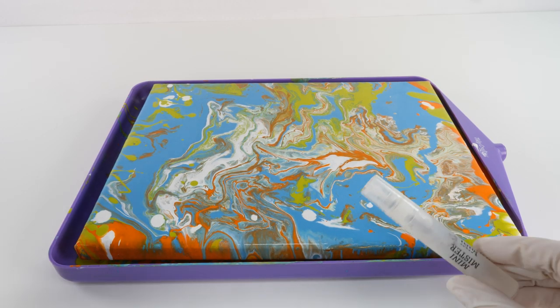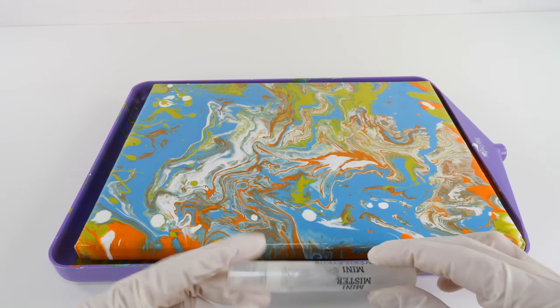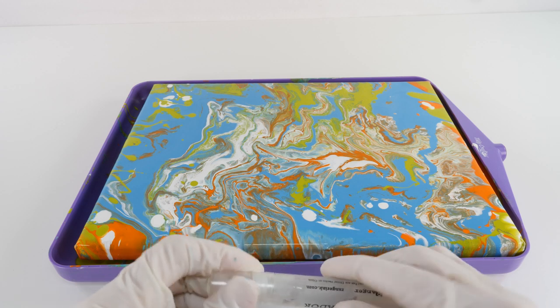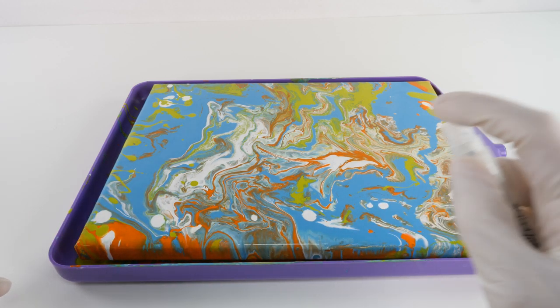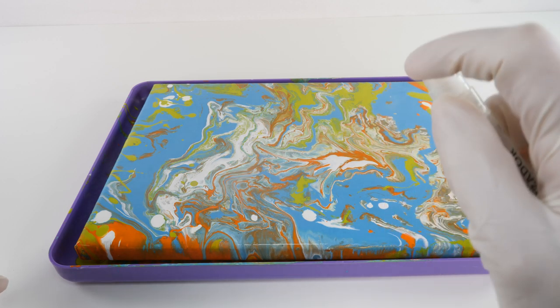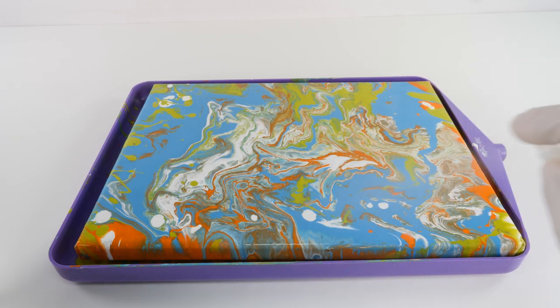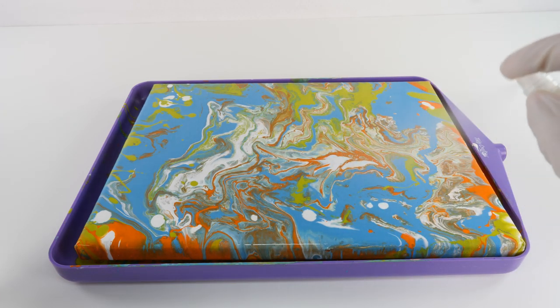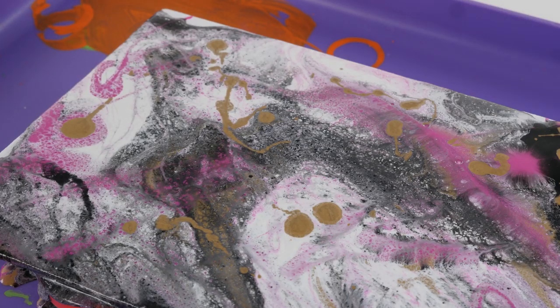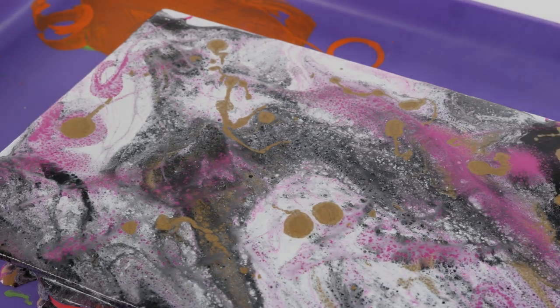I want to do something cool. I think, I hope it's gonna be cool. I used this yesterday too, it's a little mister and I have rubbing alcohol in it. I'm going to spray it on the canvas and see if it reacts with the paint at all. It did yesterday and it was really neat. It doesn't seem to be doing it, I don't know why.